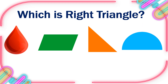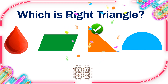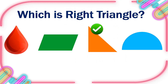Which is Right triangle? 10, 9, 8, 7, 6, 5, 4, 3, 2, 1, 0. This is the right one.